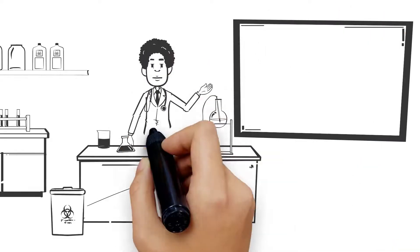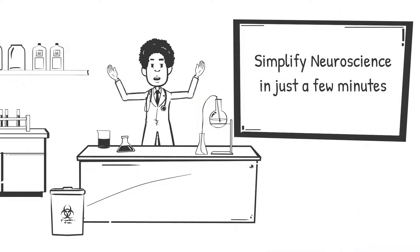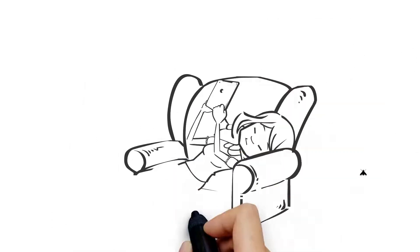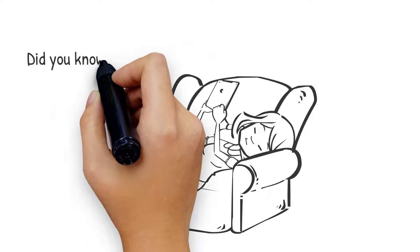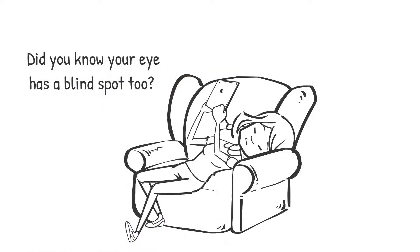Welcome to our channel, where we simplify neuroscience for you in just a few minutes. How can we see details like a fly moving across the room? And did you know your eye has a blind spot too? Let's find out.